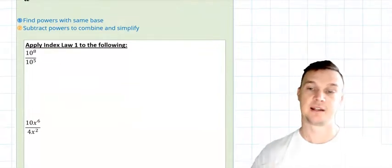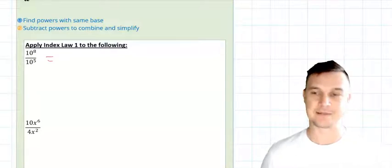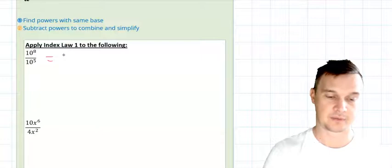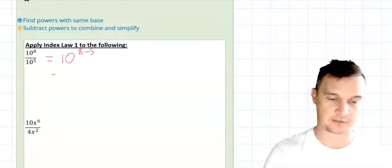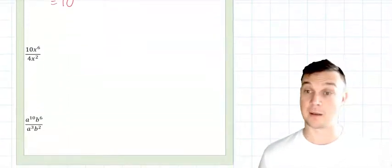So first example here, quite easy. We have 10^8 divided by 10^5, so really this is saying 10^(8 minus 5), which of course is 10 to the power of 3.